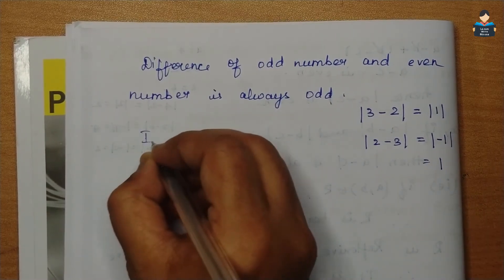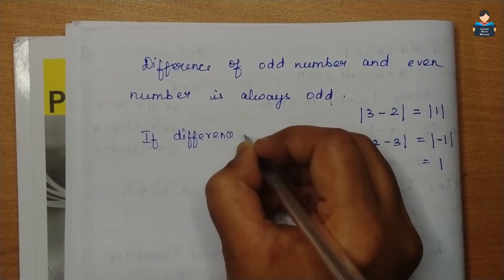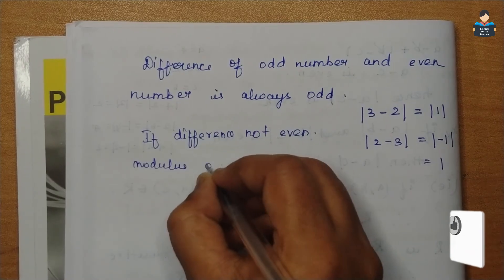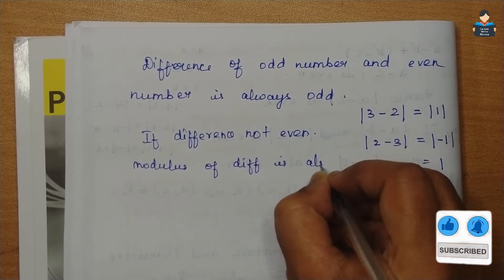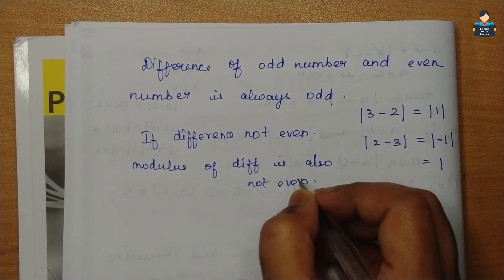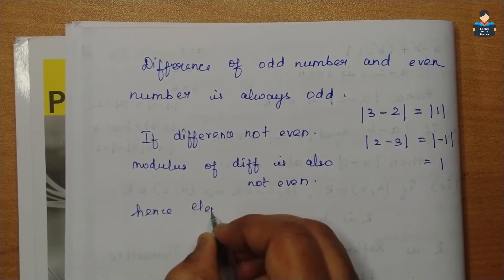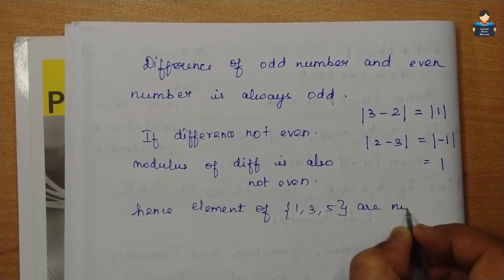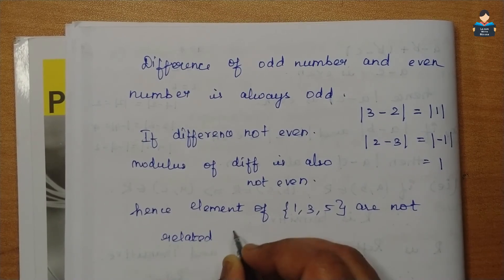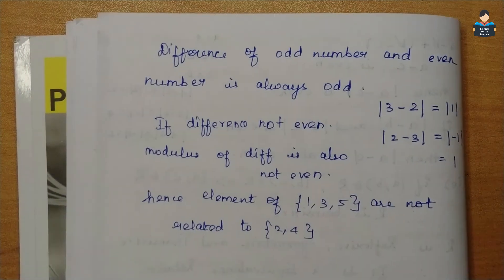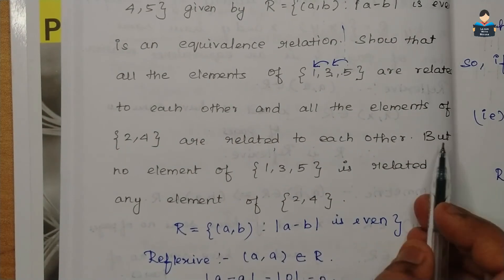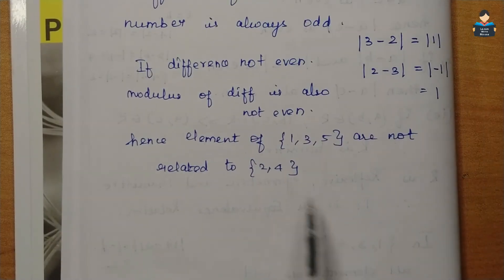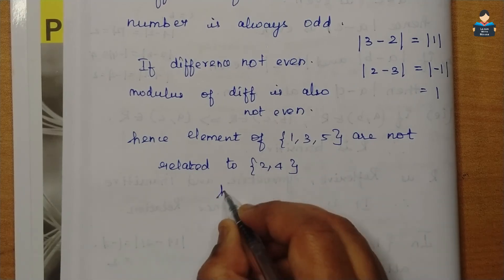If the difference is not even, then the modulus of the difference is also not even. Hence, elements of {1, 3, 5} are not related to elements of {2, 4}. But no element of {1, 3, 5} is related to any element of {2, 4}. Hence, element of {1, 3, 5} is not related to {2, 4}. Hence, proved.